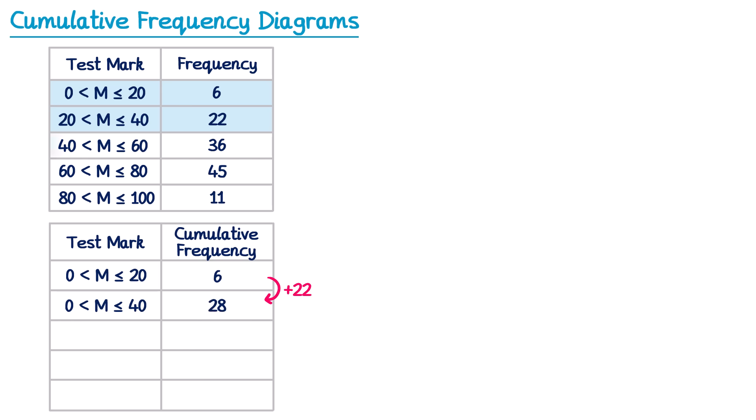Moving on to the third entry, we want to include the group from 40 to 60 but also both of the previous two groups. So the marks must now go from 0 to 60, and we need to add together all of the previous frequencies: 6 plus 22 plus 36. To do this quickly we just add the new frequency 36 onto our previous total — 28 plus 36 gives a cumulative frequency of 64.